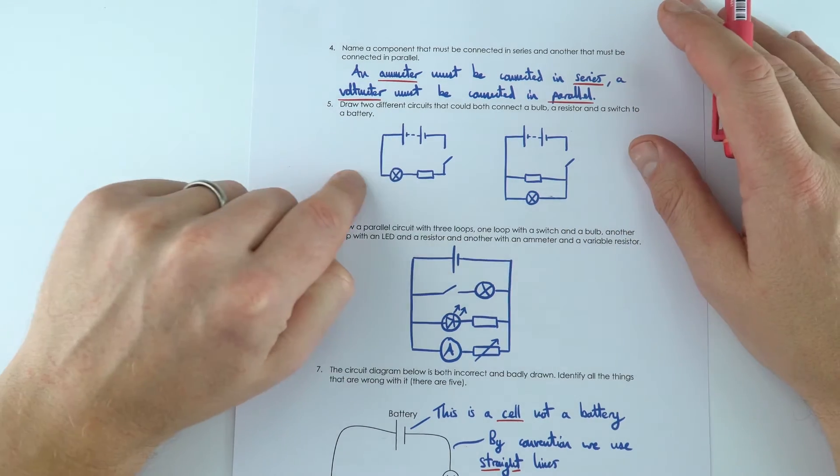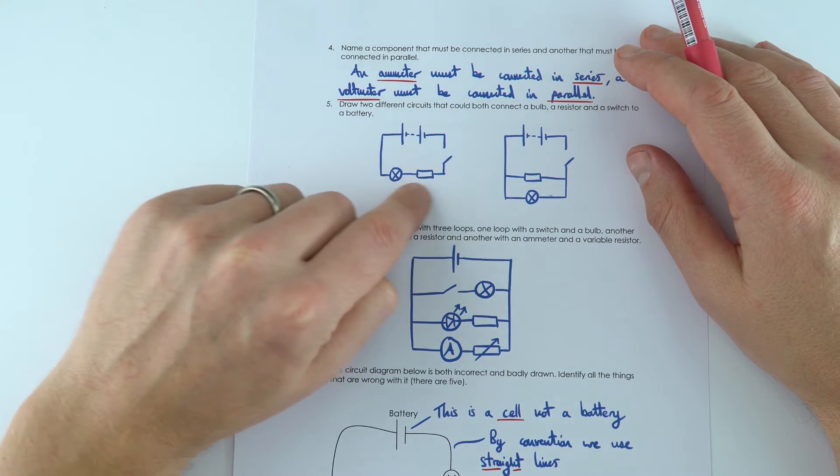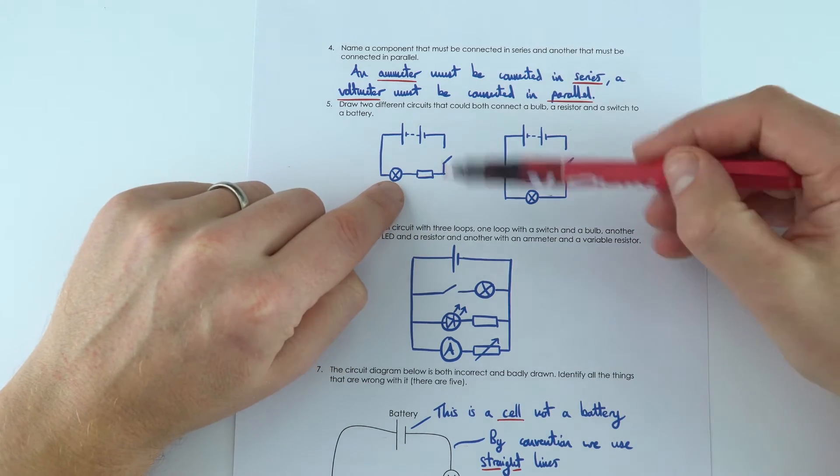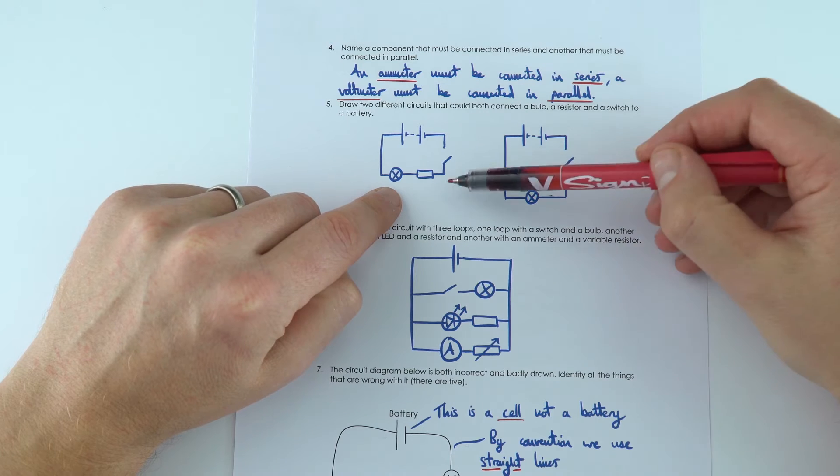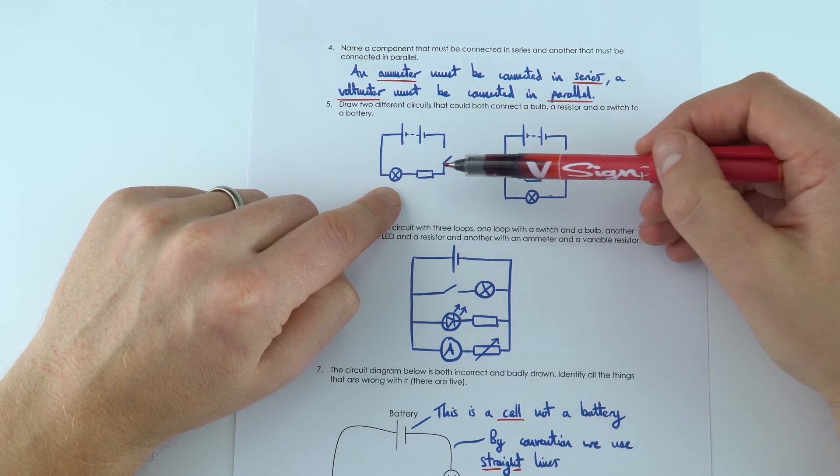So we've got a couple of different circuits, that's a series circuit, that's a parallel one there. To be honest it doesn't matter which order you put things in, it doesn't matter where you put the switch, but this one here just shows we've got an open switch, the lamp or the filament bulb and also the resistor.